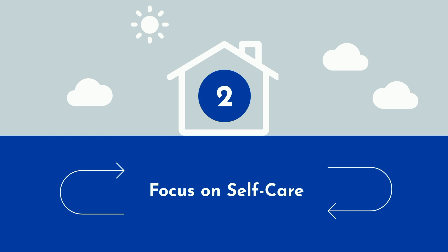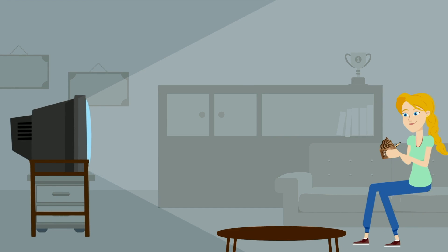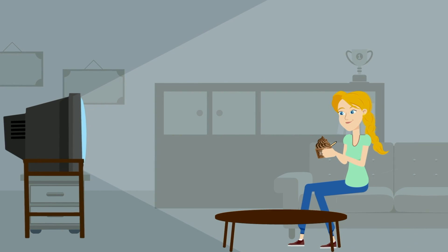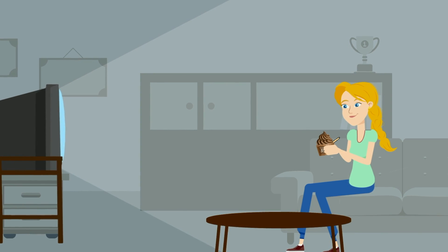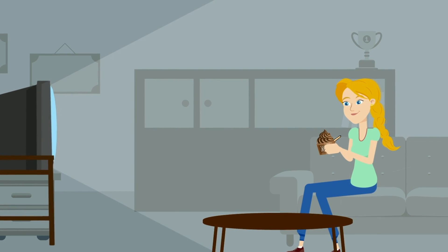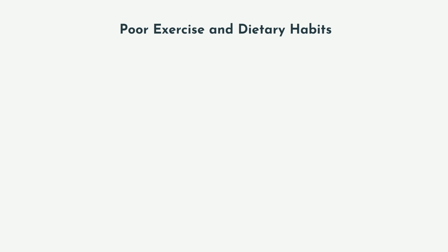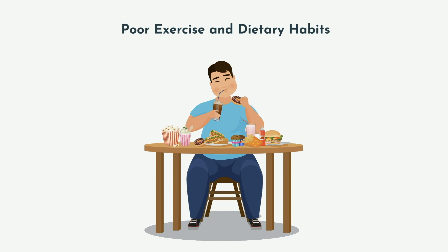When things are not going well, it's natural to slip up on your good habits. Maybe you binge with Netflix and a pint of ice cream, or decide to skip exercise for the third day in a row. But in times like this, ignoring self-care can be disastrous for more than one reason. Poor exercise and dietary habits have detrimental effects on your immune system, plus the long-term effects on your mood won't work in your favor.